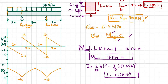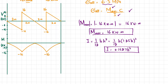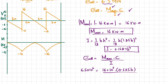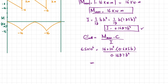With all values known, we apply the bending stress formula: σ_allowable equals M_max times c divided by I. Substituting: 6.5 times 10⁶ equals (16 times 10³ times 0.625b) divided by (0.1627 b⁴). Solving for b, we get b equals 0.2114 meters, or approximately 211 millimeters.